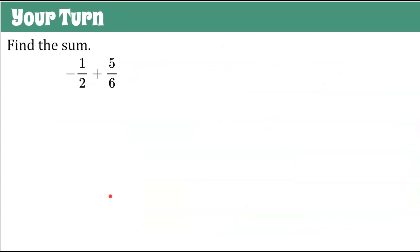Now it's your turn. Find the sum of negative one-half plus five-sixths. Pause the video, show all four steps if necessary, then come back and hit play to check your work. Good luck.